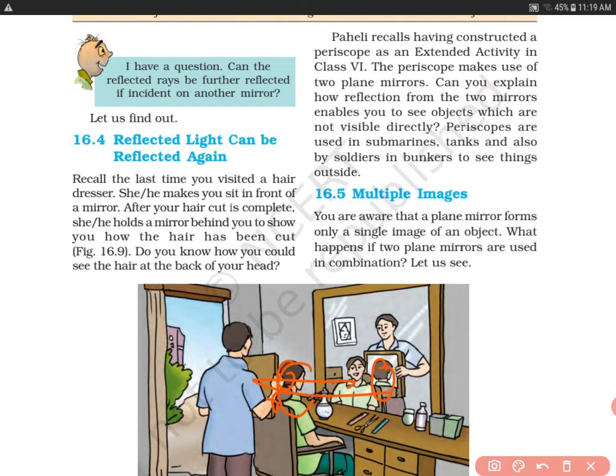Recall the last time you visited a hairdresser. There are parlors for hair cutting where this phenomenon is used. People are very beauty conscious and want to see every angle in the mirror. She makes you sit in front of a mirror and puts you in the chair. After your haircut is complete, she holds a mirror behind you to show you how the hair has been cut. Do you know how you could see the hair at the back of your head?